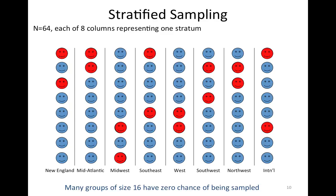This is not a simple random sample because a lot of the possible sets of 16 smiley faces here could not be the sample drawn by stratified sampling. It is not possible to use this stratified sampling method and end up with all the students from New England and all the mid-Atlantic students as your set. The definition of a simple random sample is that every group of size 16 has the same chance of being the sample. Clearly this stratified sampling method is not a simple random sample method because that is no longer true here.